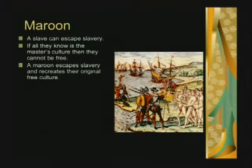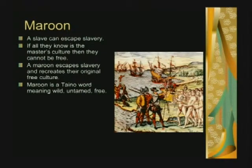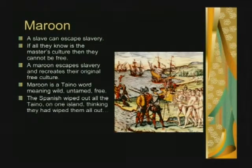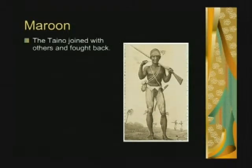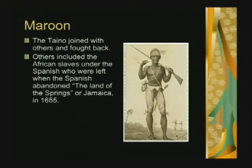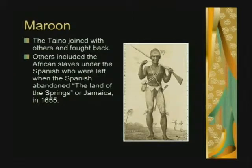This is a Spanish woodcut of Columbus making first contact with the Taino nation. 'Maroon' is a Taino word meaning wild, untamed, free. According to the Spanish narrative, the Spanish thought they had wiped out all the Taino on one island, but they were throughout the Caribbean and parts of Mexico. Taino joined with free Africans and fought back. Others included African slaves under the Spanish who were left when the Spanish abandoned Jamaica in 1655. There are maroons in the hills of Jamaica today.